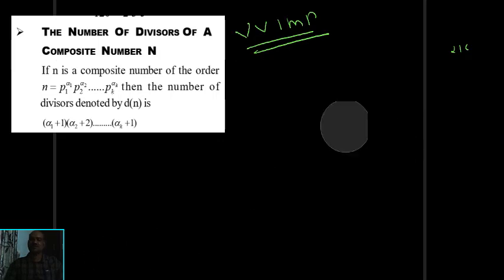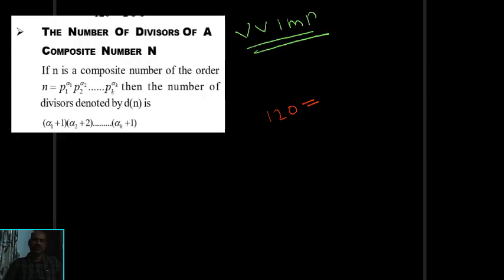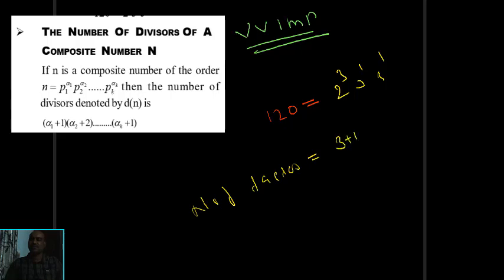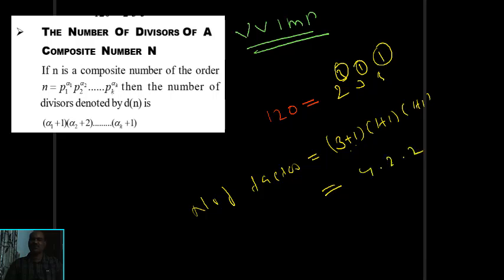For example, for 120: we have 120 = 2^3 × 3^1 × 5^1. According to the formula, the number of factors equals (3+1)(1+1)(1+1) — that is, exponent plus 1 for each prime, then multiply. So 4 × 2 × 2 = 16. There are 16 factors for 120.